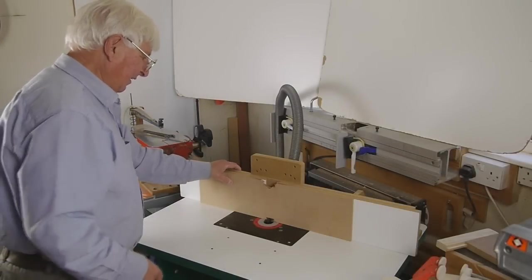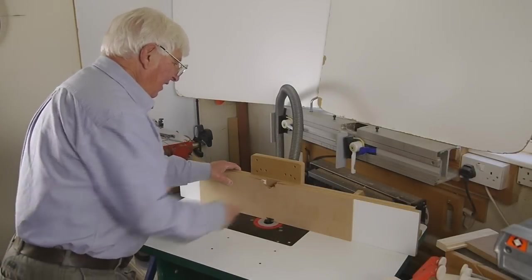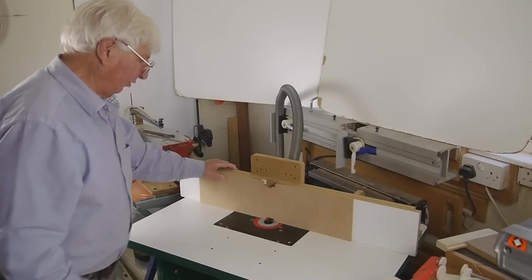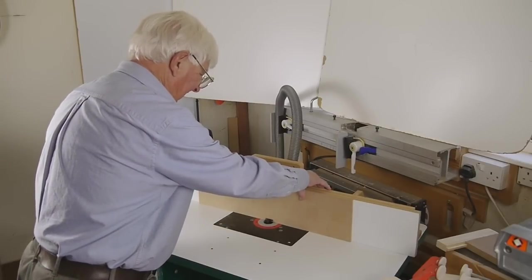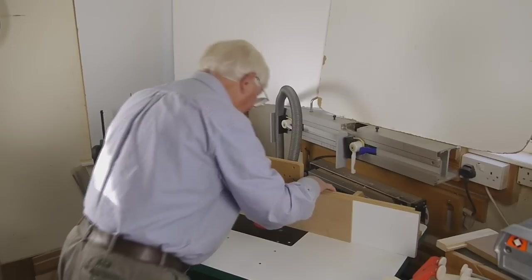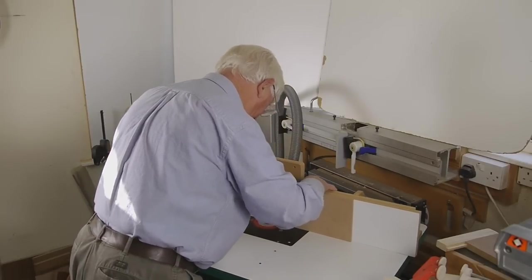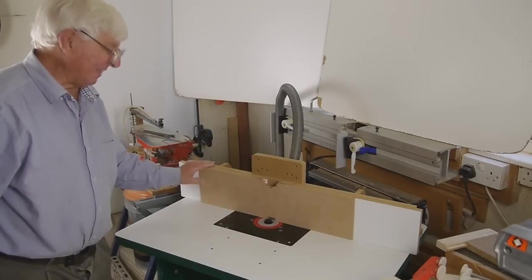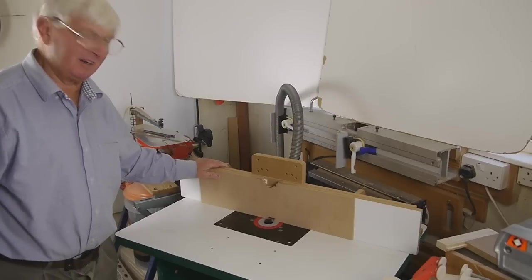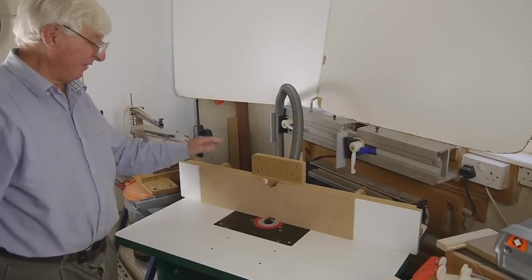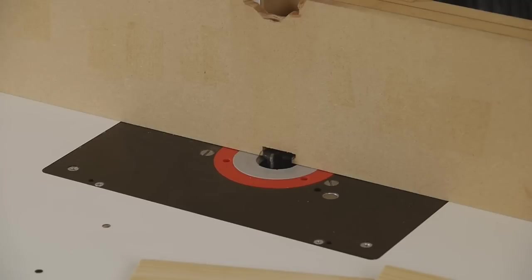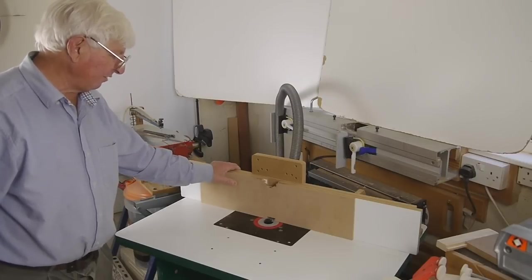Before we start to make the settings, with the zero clearance fence taped to the table fence, I'm going to switch the router on and pull the fence forward gently over the cutter to let the cutter cut its own way through the fence. That ensures the zero clearance part of it because the cutter is cutting its own way through. This is a standard procedure for making zero clearance fences, but if you've got a much bigger cutter than this, you can always rough cut the bulk of the material first before you pull the fence through the cutter.